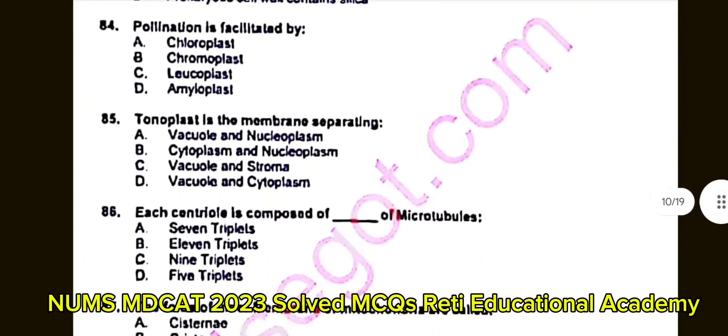Question number 85: Tonoplast is the membrane separating? A. Vacuole and nucleoplasm. B. Cytoplasm and nucleoplasm. C. Vacuole and stroma. D. Vacuole and cytoplasm. The correct answer is D: Vacuole and cytoplasm.